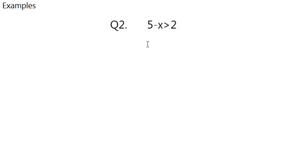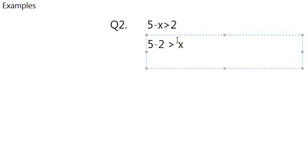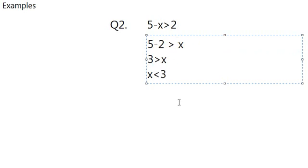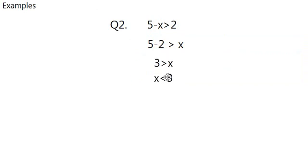You rearrange it to get that 5-2 is larger than x, and so you get that 3 is larger than x, or the other way around is x is smaller than 3. Basically that is all. These two are equal and everything is true right here.